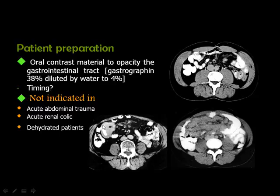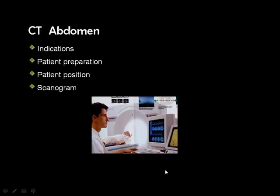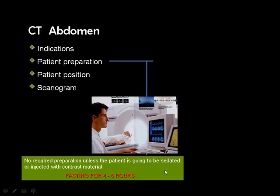If you see a bowel loop running through the mass itself, you know the mass is of bowel origin. If it involves the small bowel, most likely it is lymphoma; if it involves the large bowel, most likely it is colonic carcinoma.